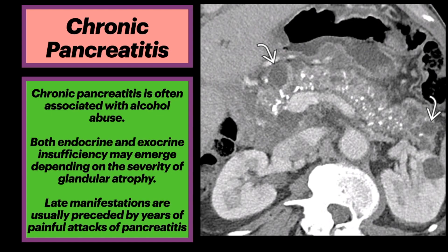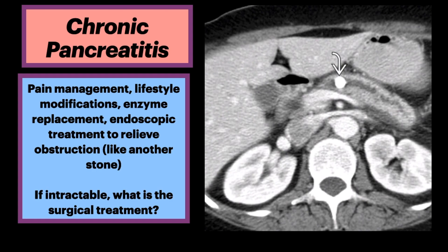Chronic pancreatitis is usually associated with alcohol abuse. Depending on the severity of glandular atrophy, both endocrine and exocrine insufficiency may emerge. These late manifestations are almost always preceded by many years of painful attacks of pancreatitis. Pain management, lifestyle modifications, enzyme replacement, and endoscopic treatment to relieve obstruction, like from a stone, are usually the first steps.